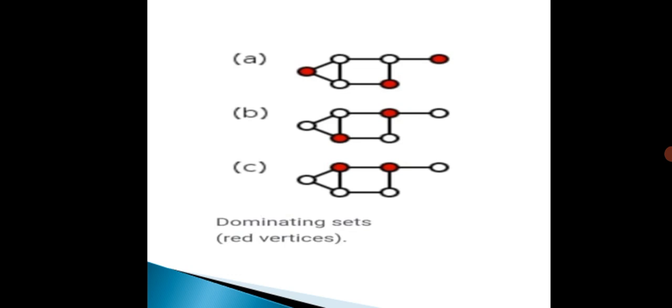These graphs have the smallest dominating set with two vertices, so our domination number is 2.